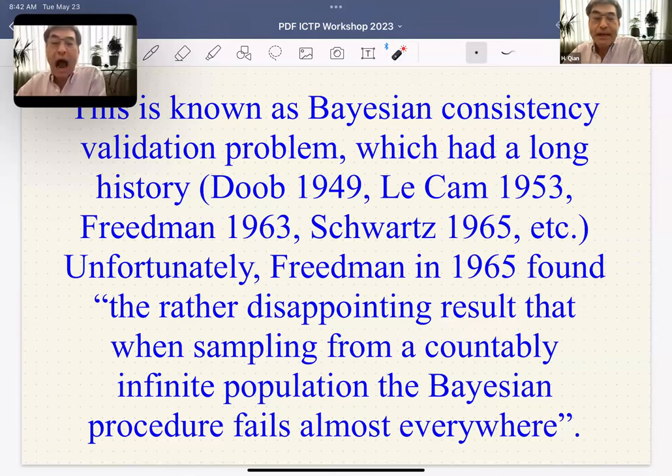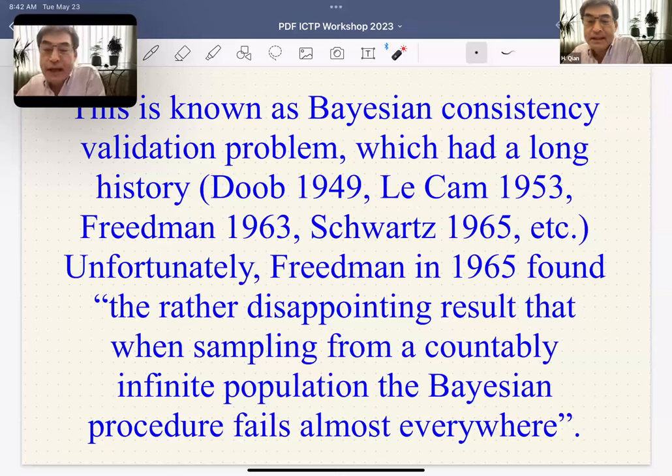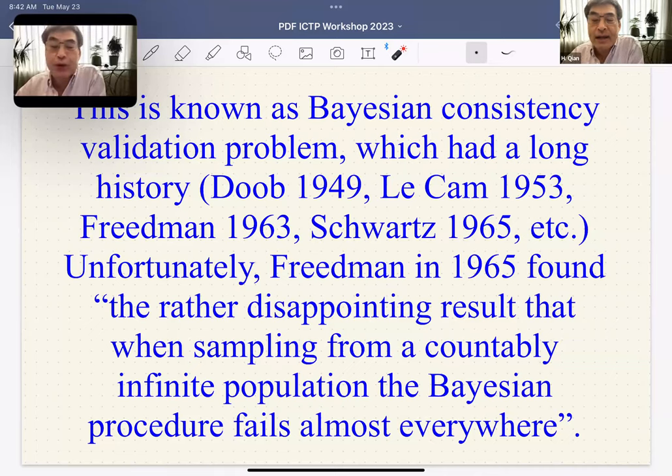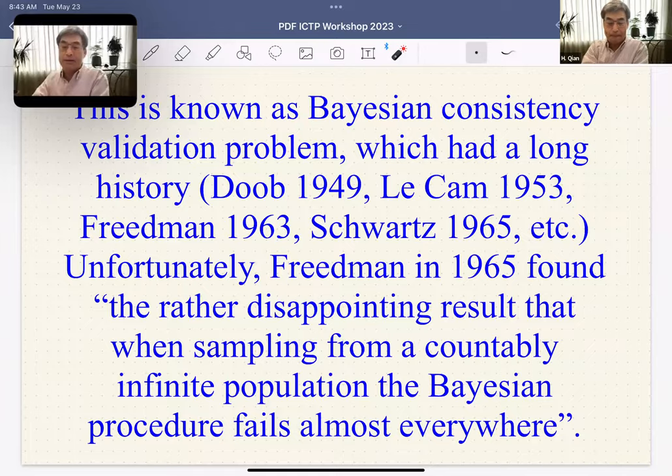This line of discussion has a long history in statistics, called the Bayesian consistency validation problem. Friedman in 1965 found the rather disappointing result that when sampling from a countably infinite population, the Bayesian procedure fails almost everywhere. This result literally killed this nice story. However, we should use the finite result and realize the importance of which limits to do first.